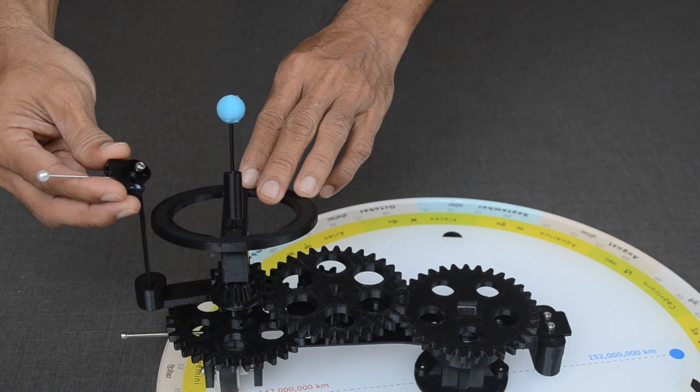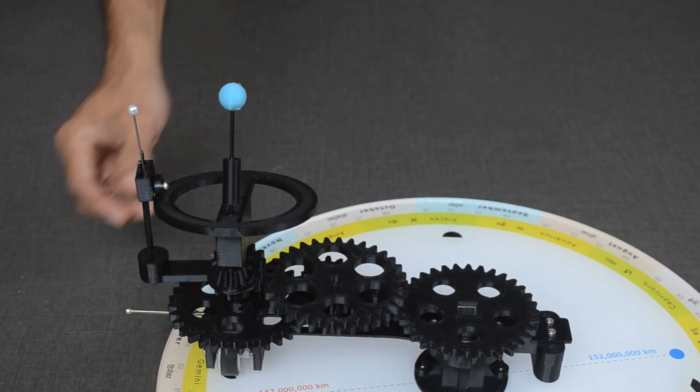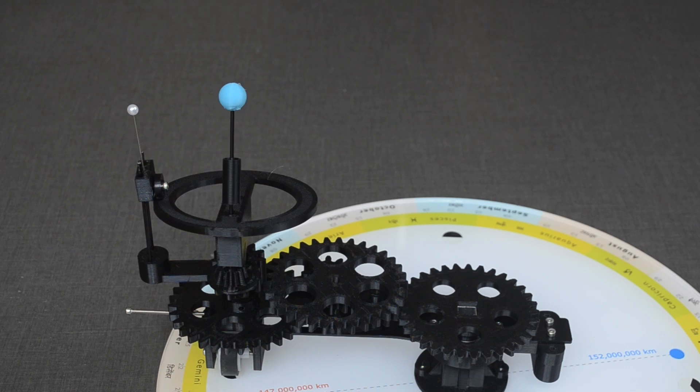Moon is placed with the wheel resting on the circular disk. Moon rotates in an anticlockwise direction when the handle is moved in the same direction.